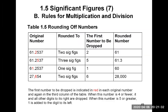Let's review how to round before applying the sig fig rule for multiplication and division. For the number 61.2537, if we need to round it to two sig figs, we keep the 6 and the 1, counting from the left. What comes after the 1 is a 2, which is below 5, so we round down, ignore those digits, and get 61.